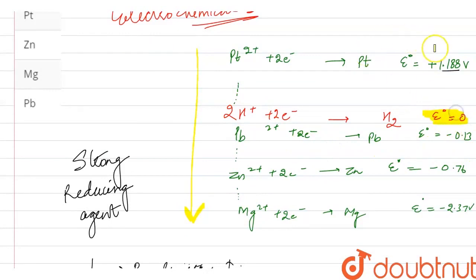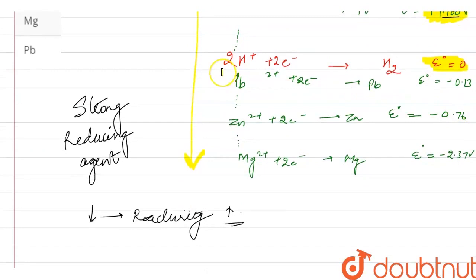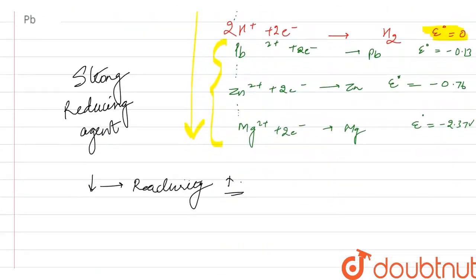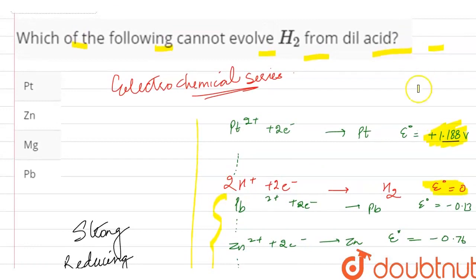It will be platinum. Platinum will not evolve hydrogen. In these other cases, they will easily evolve hydrogen because they have negative potential. So you can clearly see that the metal that does not evolve hydrogen from dilute acid is platinum. The answer is Part A.